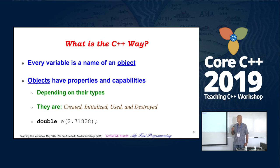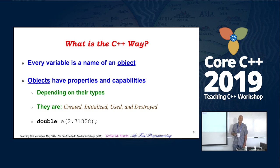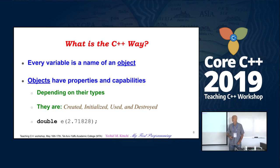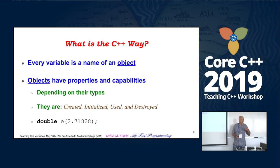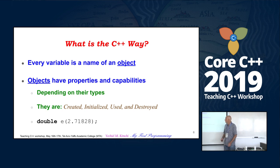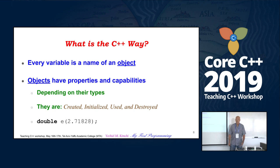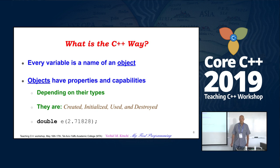First of all, everything is an object. I believe in words — anything you cannot name, you cannot really think about. And the problem of teaching C at the beginning, if you want to go to C++, is that what you learn at age five it's very hard to disengage from. So start by speaking object-oriented. An int is an object, and it has properties and capabilities depending on the types. Objects are created, initialized, used, and destroyed. I don't use the equal sign for initialization.